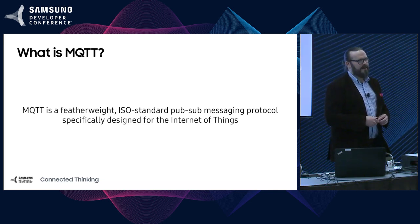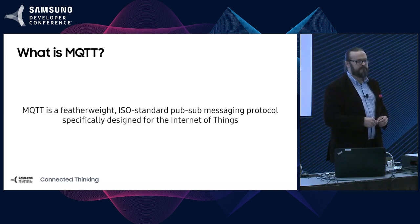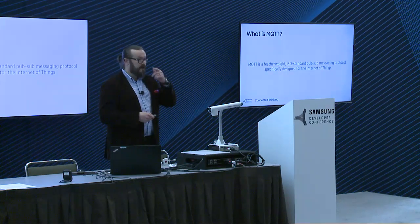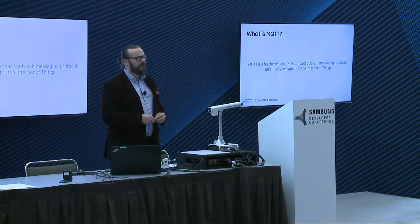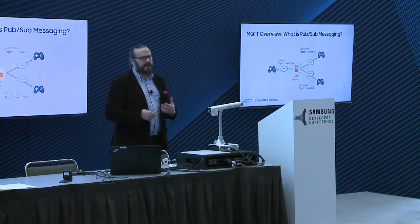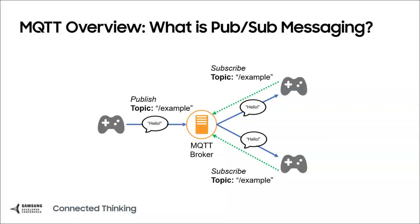We're going to talk a little bit about MQTT today, which is a protocol that you may run across if you're working in IoT. Basically, MQTT is a featherweight, ISO-compliant PubSub messaging protocol. It's specifically designed for the Internet of Things, but it was actually developed in the late 90s by IBM and some oil and gas folks. What's interesting about MQTT is that it bakes PubSub messaging directly into a protocol that you can use on devices that don't have a lot of RAM or resources.